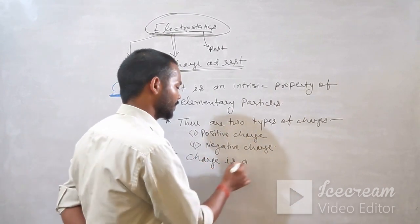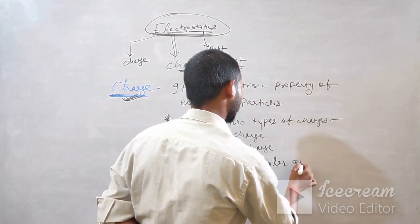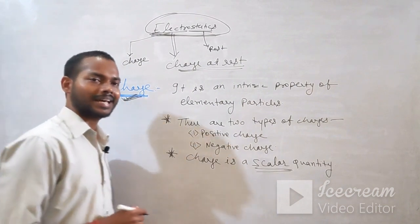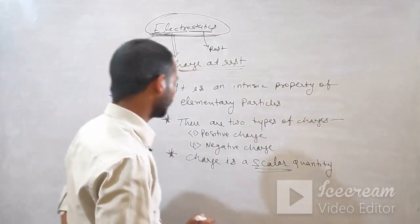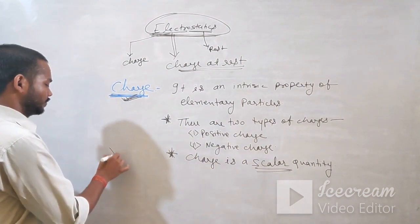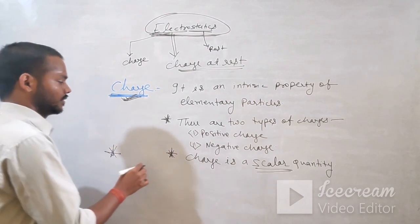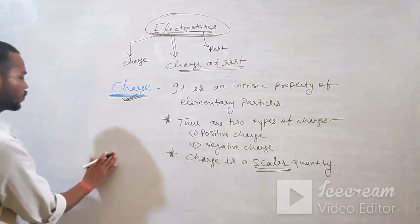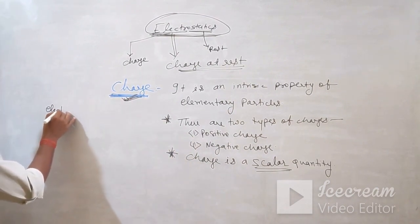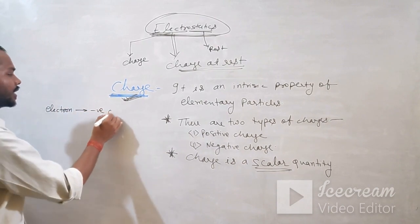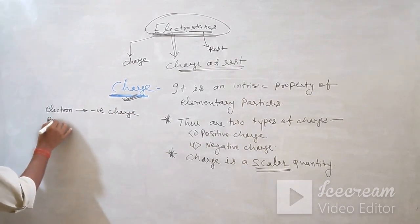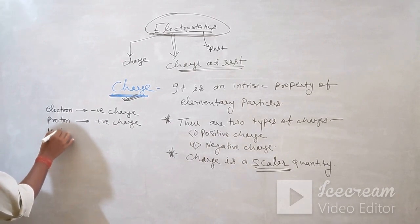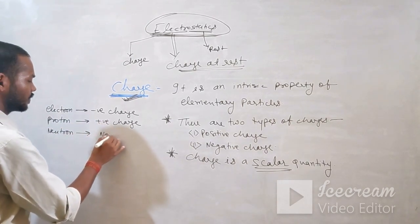Charge is a scalar quantity — meaning it has only magnitude, not direction. Now, charge is of two types: positive and negative. Looking at elementary particles: electron has negative charge, proton has positive charge, and neutron has no charge — it is neutral.